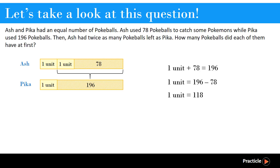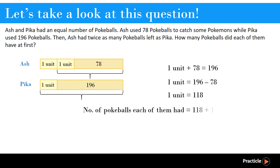If we know that 1 unit is equal to 118, then we can actually find how many pokeballs Pika had at the start, which is equal to 1 unit plus 196. Therefore, each of them had 118 plus 196 pokeballs, which is equal to 314. And there we have our answer.